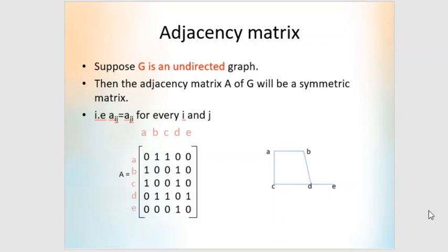For an undirected graph, direction is not a factor — if there is an edge between two nodes, simply write 1. The adjacency matrix of an undirected graph is a symmetric matrix, meaning the matrix and its transpose are equal. So when writing an adjacency matrix for an undirected graph, it will always be symmetric.